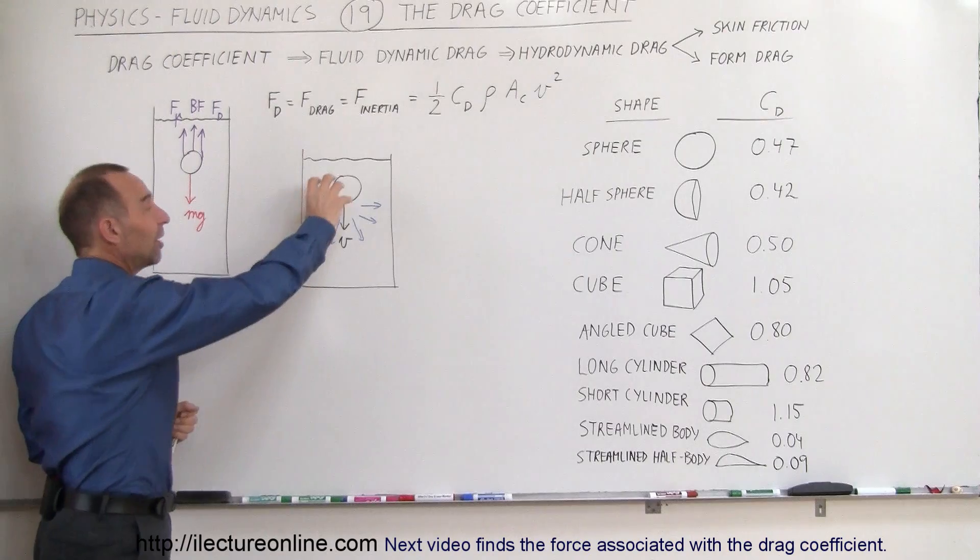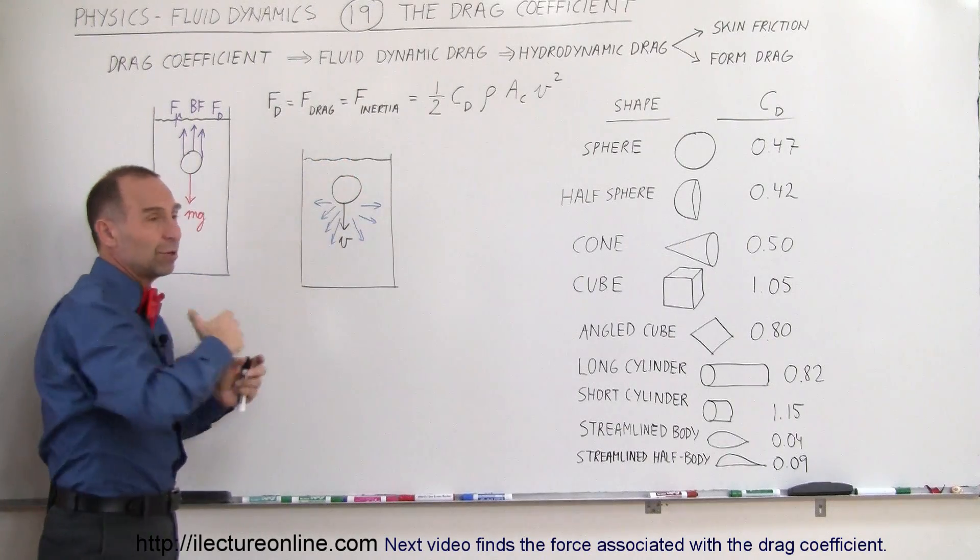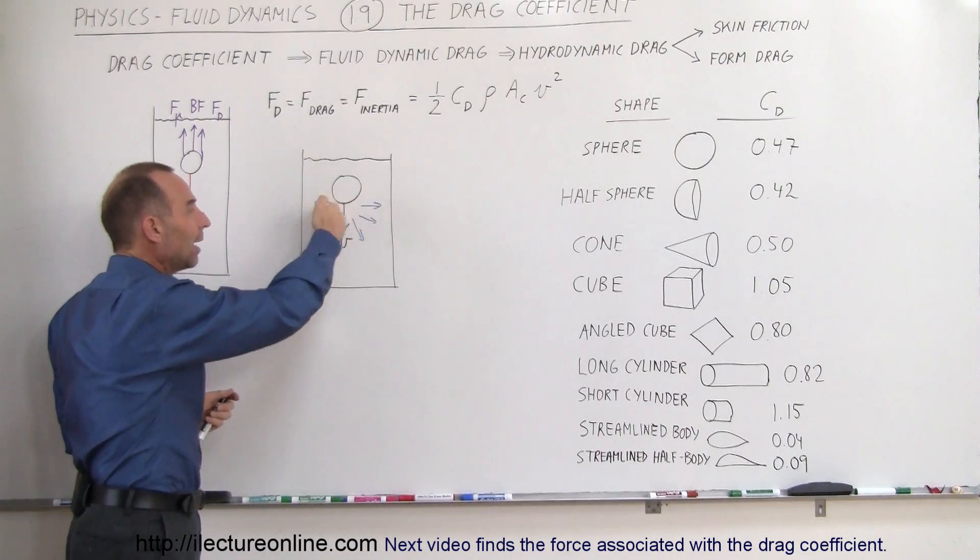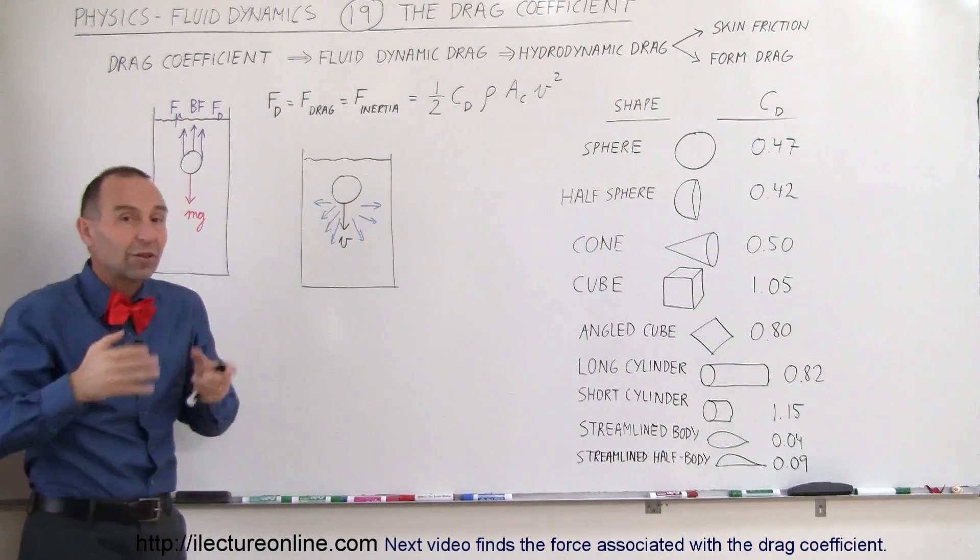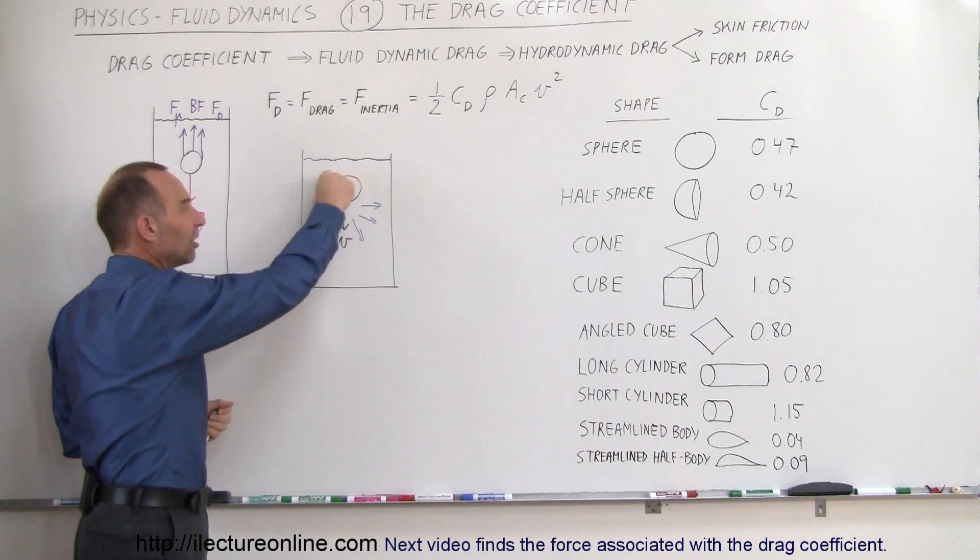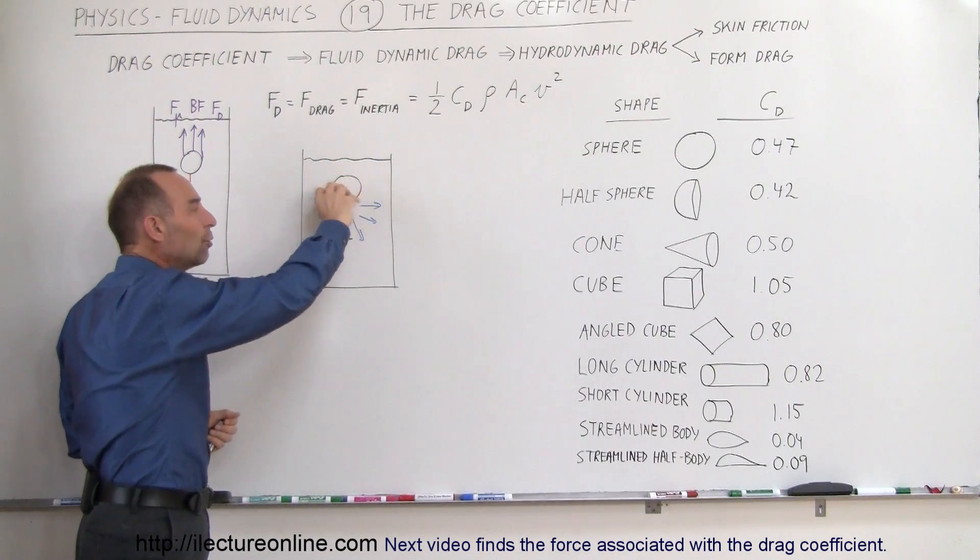Well what it is, is as an object moves through a fluid, it could be horizontally, vertically, doesn't matter, but as it's moving through a fluid it has to push away out of the way the fluid that's there where it wants to take its place. And the shape of the object has a lot to do with how easy it is to move the fluid out of the way.